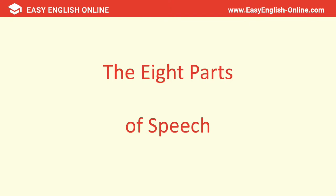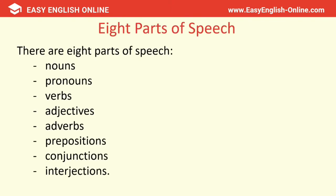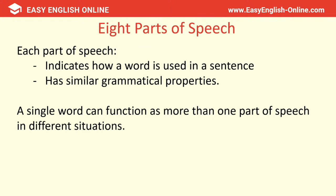So the eight parts of speech. In the English language, there are eight parts of speech: nouns, pronouns, verbs, adjectives, adverbs, prepositions, conjunctions and interjections. Every word we use is a part of speech. Each part of speech indicates how the word is used in a sentence — it's a category of words which have similar grammatical properties. A single word can function as more than one part of speech in different situations. So let's look at the different types of speech in more detail.